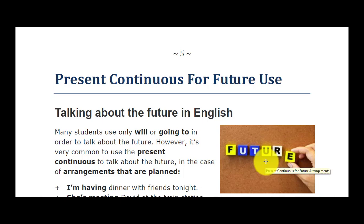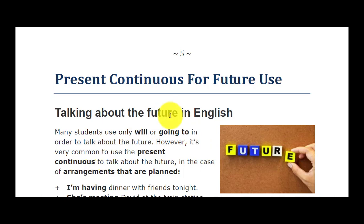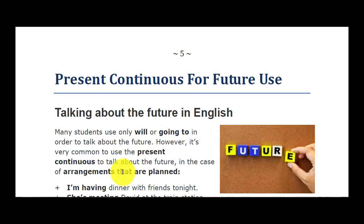Future time ki baat karne ke liye English mein kai cheezan, kai tarah ke structures istemal hote hain — misal ke taur par 'will' aur 'going to' istemal hota hai, jo ke hum next lesson mein parheinge. Magar present continuous bhi future ki baat karne ke liye use hota hai, khaaskar fixed arrangements aur plans ke liye, which you can talk about before you have done the things you have planned.